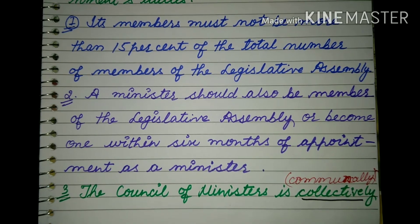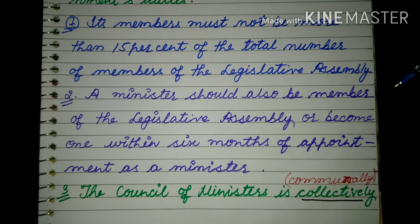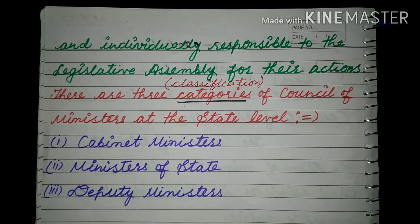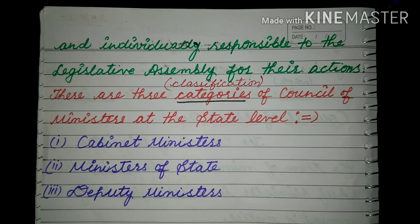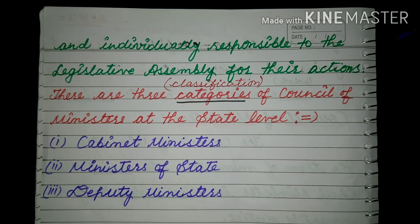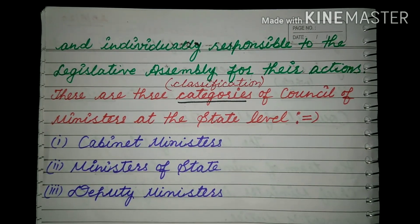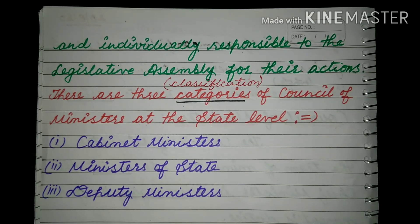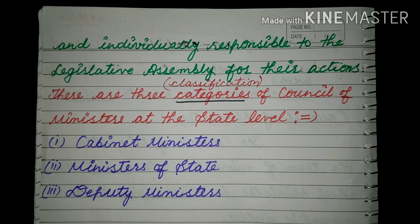The council of ministers is collectively — यानी commonly, सामूहिक रूप से — and individually responsible to the legislative assembly for their actions — individually यानी व्यक्तिगत रूप से वो जिम्मेदार होते हैं legislative assembly के प्रति। There are three categories of council of ministers at the state level: one is cabinet minister, second is ministers of state, and third is deputy minister. In our next video we will discuss about these three categories. Till then, have a nice day!